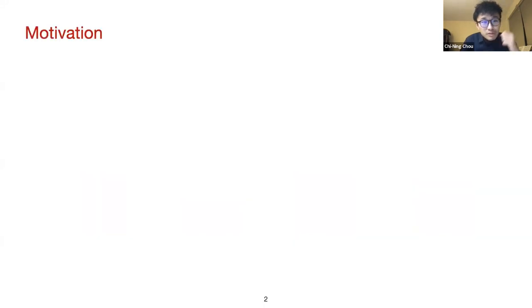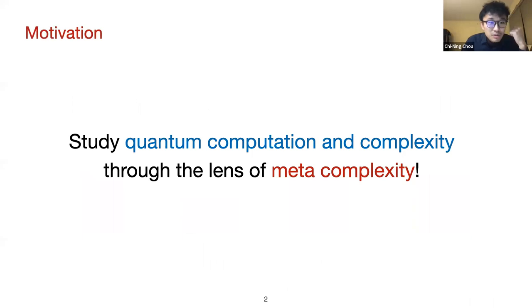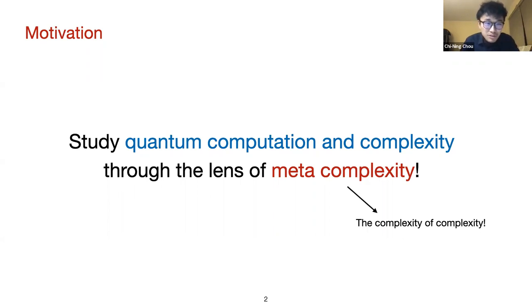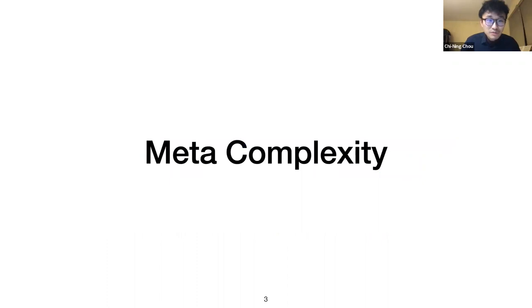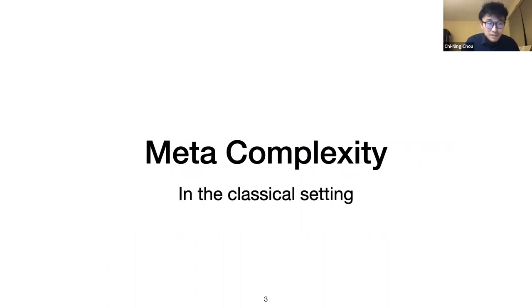This work is about studying quantum computation and complexity through the lens of meta complexity. You might ask: what's meta complexity? In short, it is the complexity of complexity. We're trying to study quantum computation complexity through the lens of complexity of complexity, and to be more formal, let me start with the concrete definition of meta complexity, especially in the classical setting.